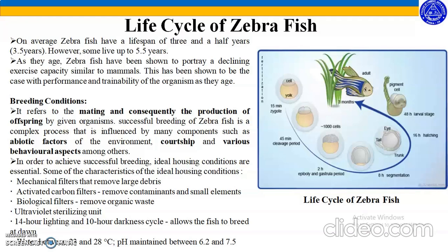The unfertilized eggs do not develop beyond the first few cleavage steps. Zygotes are formed when the cells are fertilized, and this may occur immediately as the eggs are released or within a period of 72 hours. Fertilization is followed by cell division. In the cleavage phase, this may take between 40 minutes to 2 hours. You can see the life cycle of zebrafish along with time intervals, representing probable time periods at each developmental stage.